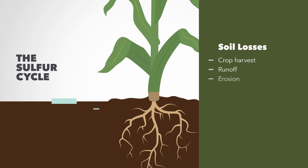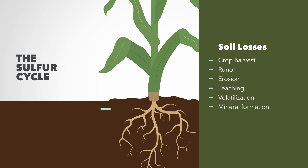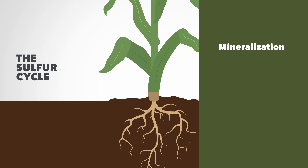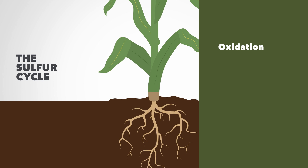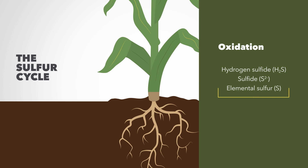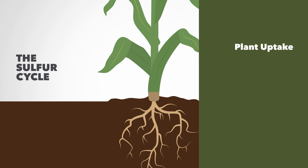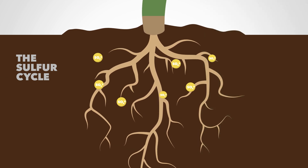Losses from the soil are the activities that draw sulfur out of the soil, including crop harvest, runoff and erosion, leaching, volatilization, and mineral formation. Mineralization is the process of transforming organic sulfur into inorganic forms such as hydrogen sulfide, elemental sulfur, as well as sulfide minerals. Oxidation is the process of transforming hydrogen sulfide, sulfide, and elemental sulfur to sulfate. Plant uptake is when the plant's roots absorb the sulfur as sulfate from the soil.